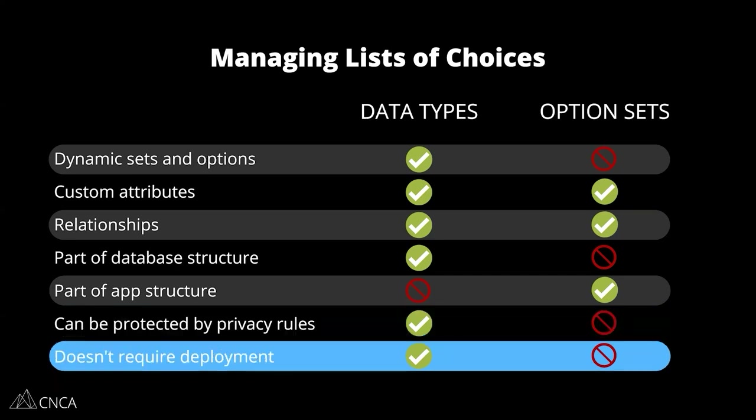Because option sets are a part of the overall app architecture, you have to deploy the application in order to publish any changes to live. So if you add new choices, or if you create new sets or modify the sets in any way, you have to deploy them in order for those to be published to the live version of your application. Data types do not require deployment when it comes to editing your records. Of course, if you introduce a new field or change the names of things in the structure of the data type — the label, the field names, or the format of the fields — those do need a deployment.